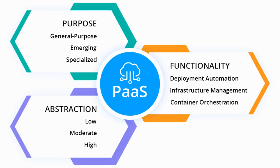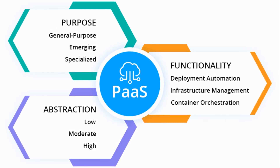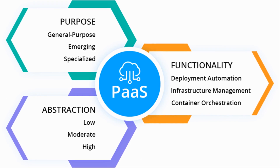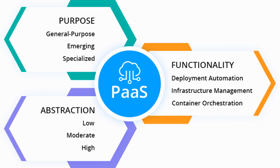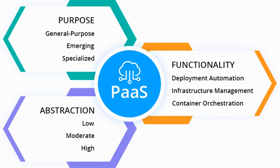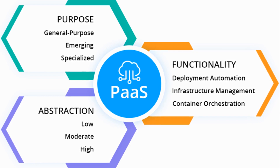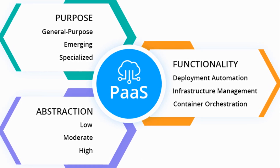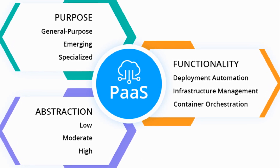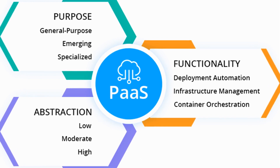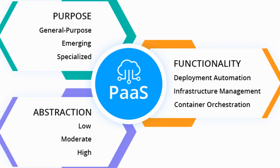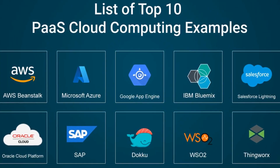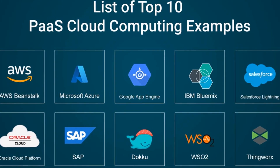PaaS is a way that developers can create a framework to build and customize their web-based applications on. Developers can use built-in software components to create their applications, which cuts down on the amount of code they have to write themselves. A few examples of PaaS are AWS Elastic Beanstalk, Heroku and Red Hat OpenShift.